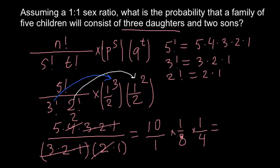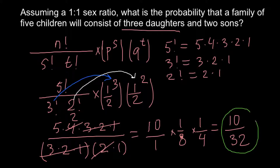So we multiply 10 by one-half raised to the 5th power, which gives us a denominator of 32. Our final answer is 10 over 32. Of course you can simplify further by dividing 10 by 32 to get a decimal answer.